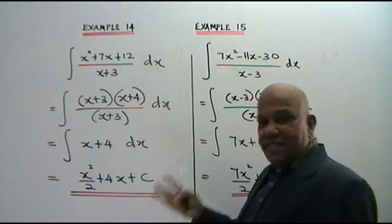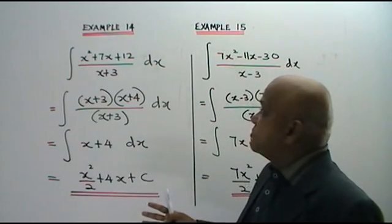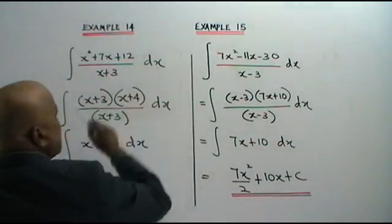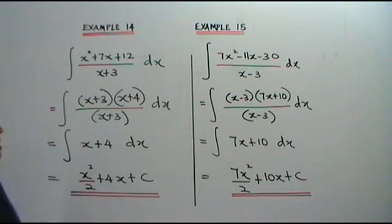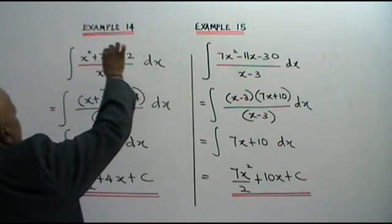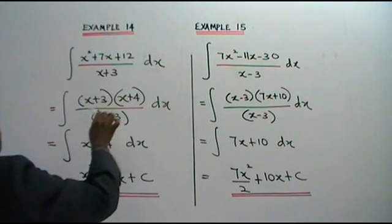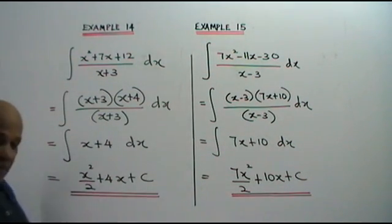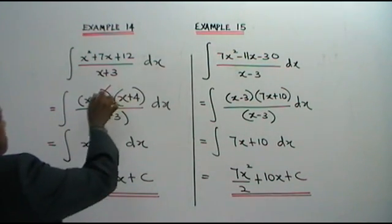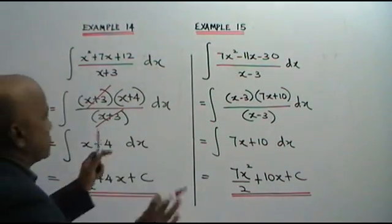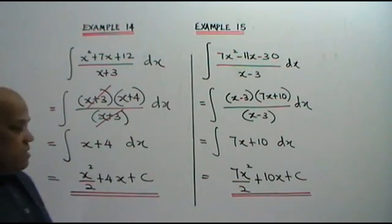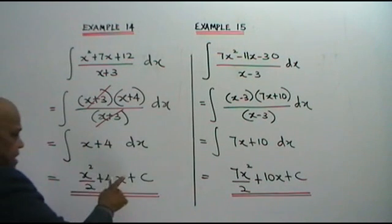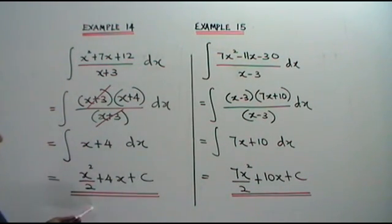Here I have for you another two examples on indefinite integration. Let's look at example 14 first. You are asked to integrate this with respect to x. What you do is you factorize the numerator — this is a quadratic expression. When you factorize you get x plus 3 times x plus 4 over x plus 3. You see that x plus 3 cancels, leaving x plus 4. Now we integrate x plus 4: power 1, 1 plus 1 is 2, bring the 2 down. For the constant, just add the x. Plus C. This is your answer.